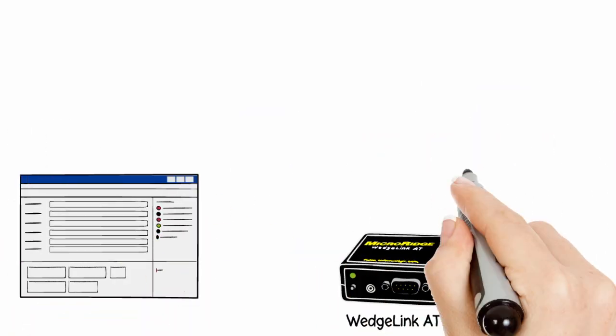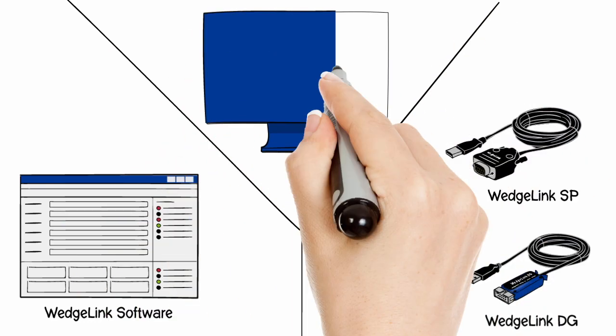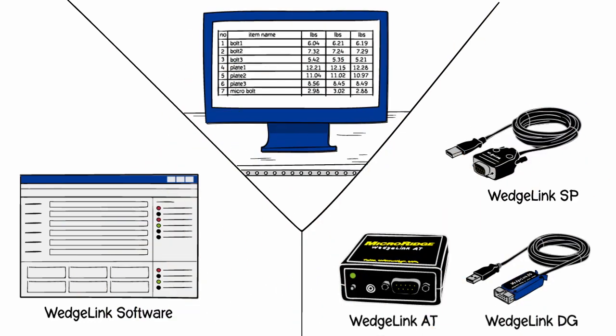WedgeLink software and hardware keyboard wedges convert gauge data into the format required for general-purpose programs such as Microsoft Excel.